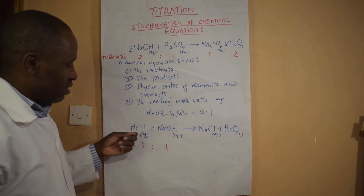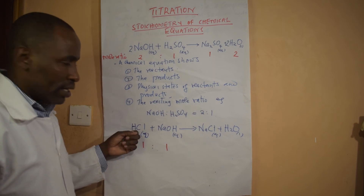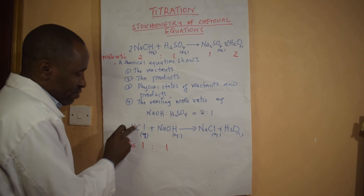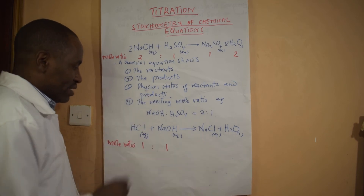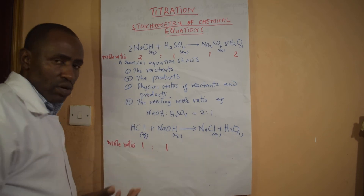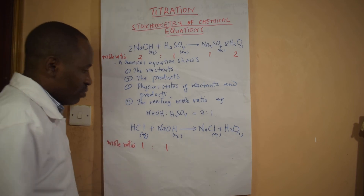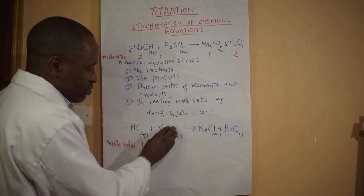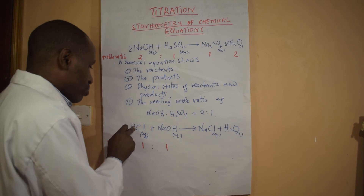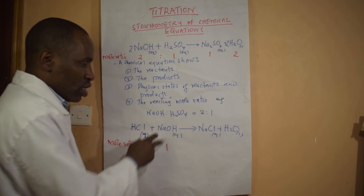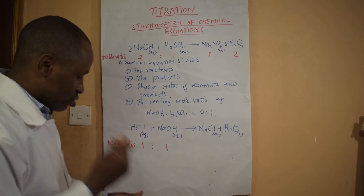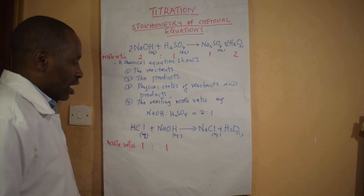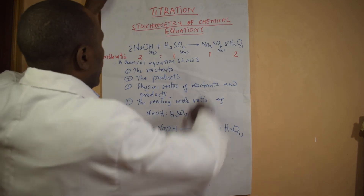Therefore you can see that the reacting mole ratio of HCl to sodium hydroxide is 1:1. In other words, if I get the number of moles of HCl — perhaps when given the molarity and the volume — then I can get the number of moles of sodium hydroxide, because the moles of HCl equal the moles of sodium hydroxide.